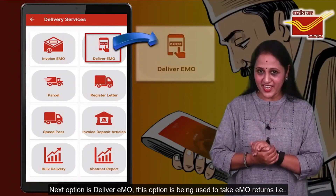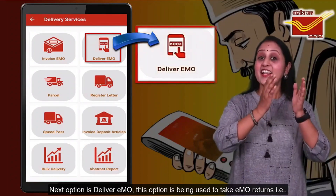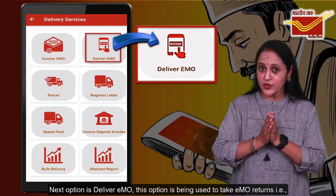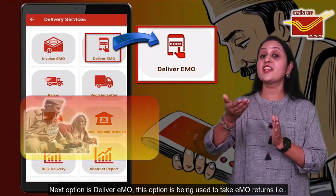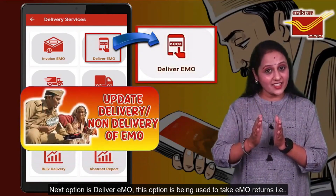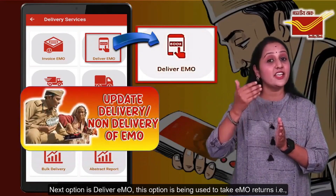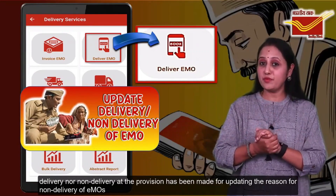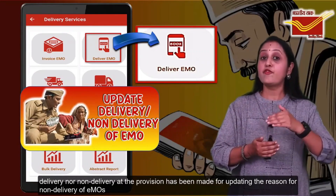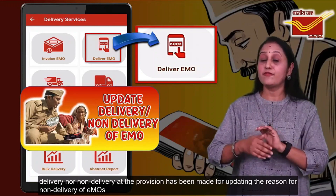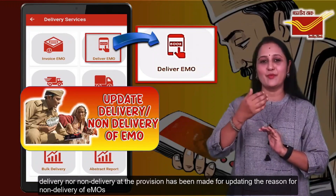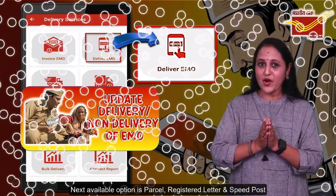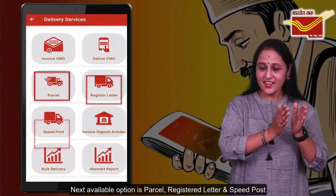Next option is Deliver EMO. This option is used to take EMO returns, that is either delivery or non-delivery, and the provision has been made for updating the reason for non-delivery of EMO.